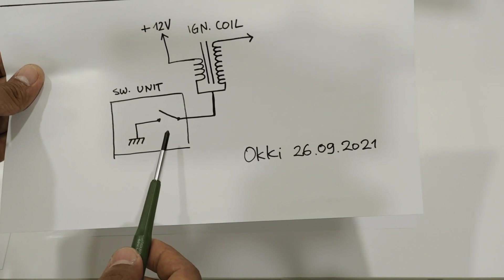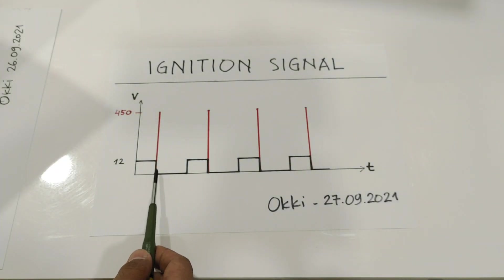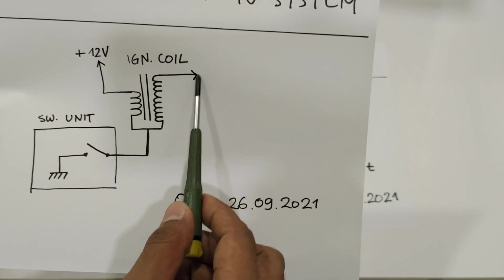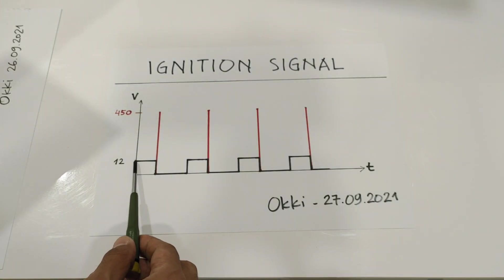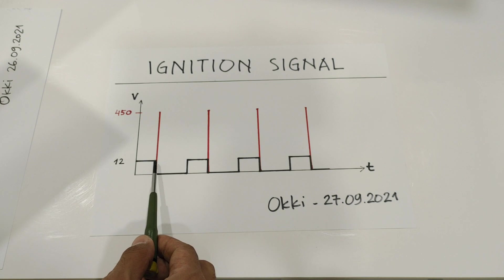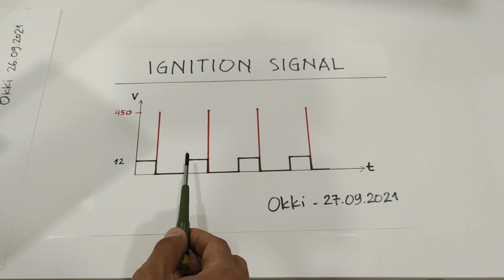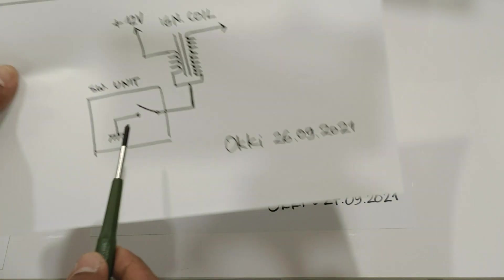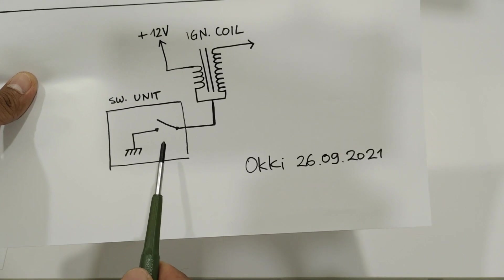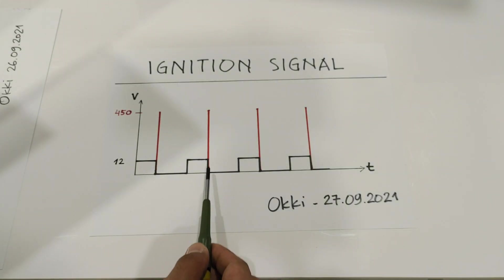So this is the charging part and then this one is the discharging part. We will get spark at the spark plug, and then the next charging part is here. If the switch is open we will get also spark here.